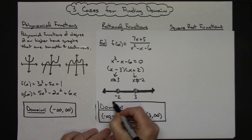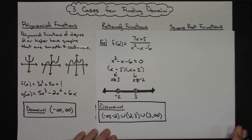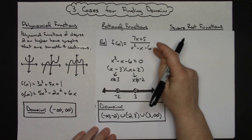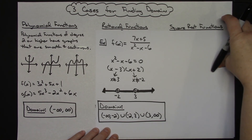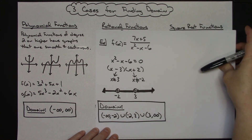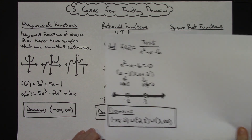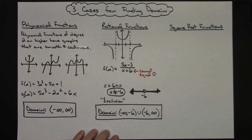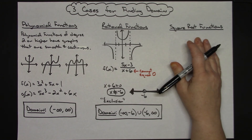That was the second example of working a rational function with the denominator being a little more complicated, as opposed to just a nice x minus something or x plus something. Now let's take a look at the last category — square root functions.